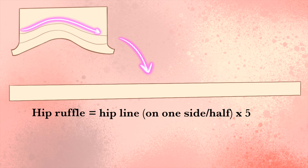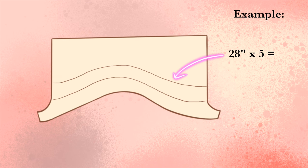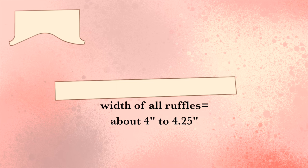So for example, if the line measures 28, one hip ruffle should end up being about 140 inches. And by the way, the width of the hip ruffles and the leg ruffles are about 4 inches or 4 and a quarter inches for larger sizes.